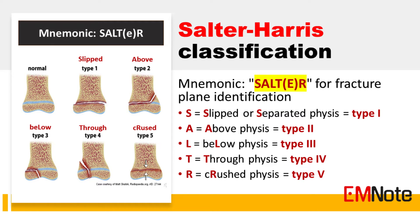Growth plate cartilage undergoes hypertrophy and calcification to facilitate bone lengthening. This proliferation zone creates a vulnerable area in the bone, increasing the susceptibility to fractures. The widely adopted Salter-Harris Classification, introduced by Canadian physicians Salter and Harris, categorizes fractures into five types, with higher numbers indicating a greater risk of growth impairment. A helpful mnemonic for recalling the system is SALTR, which corresponds to the plane of fracture, as illustrated below.